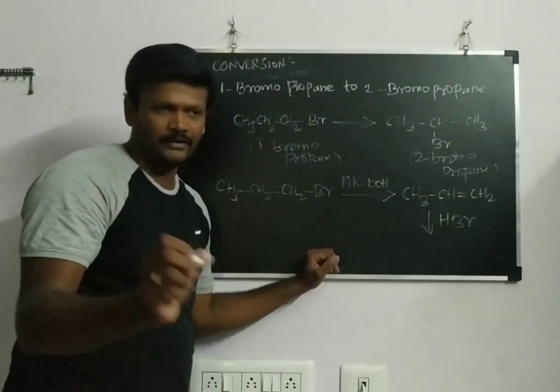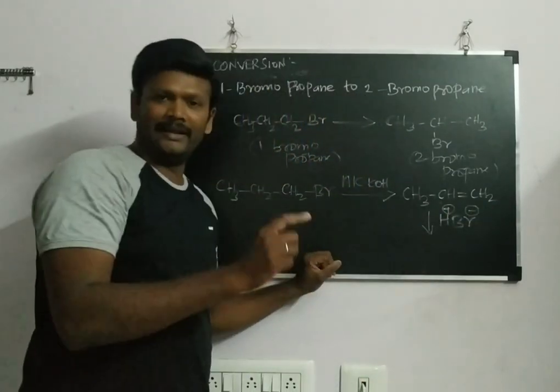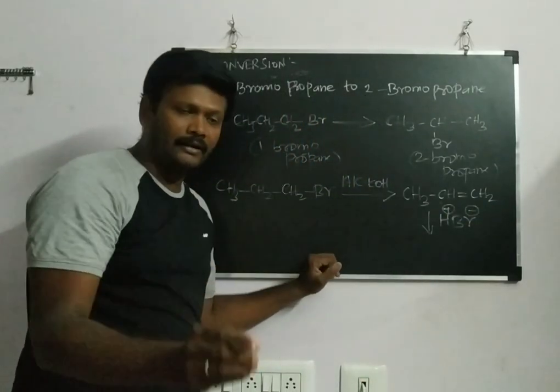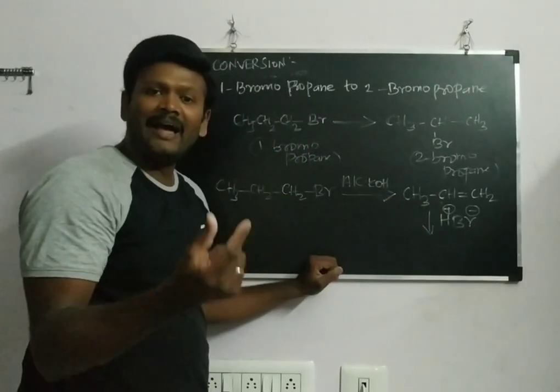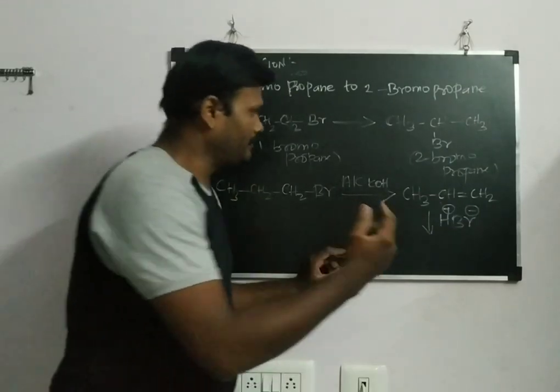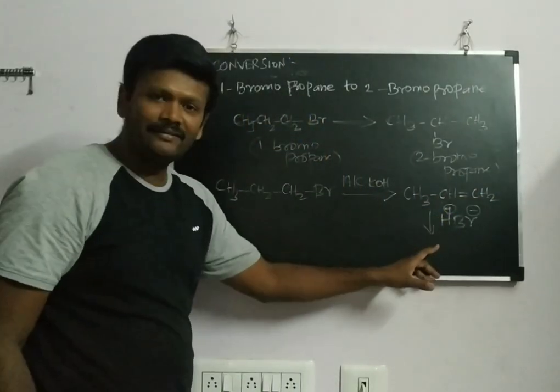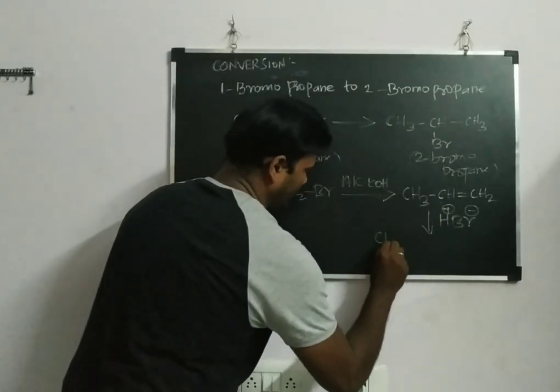The HBr—H is a positive entity, Br minus is a negative entity. The negative entity will go to the carbon which is having less number of hydrogen. In a double bond, that is nothing but the Markovnikov rule. According to that, we will be getting a product.